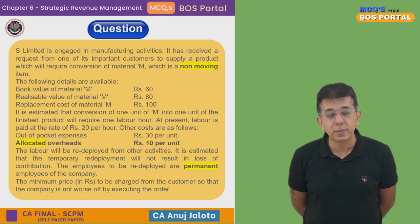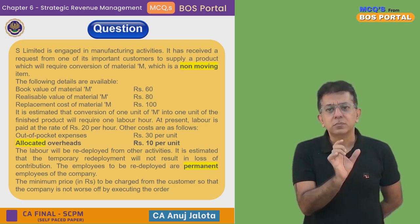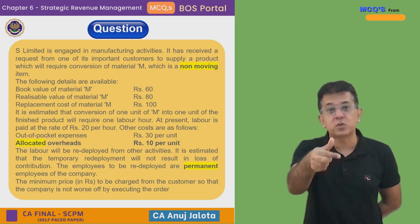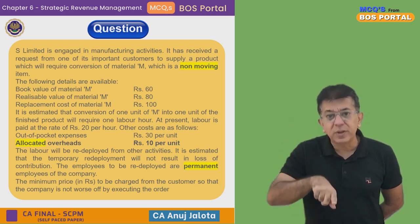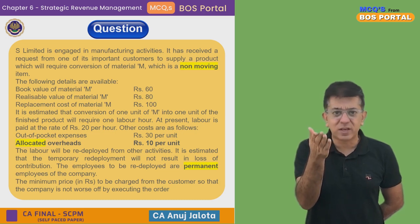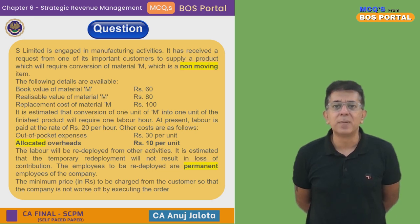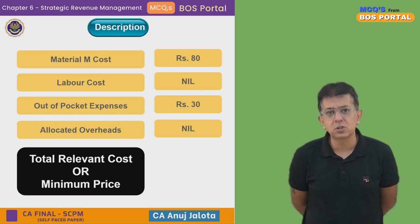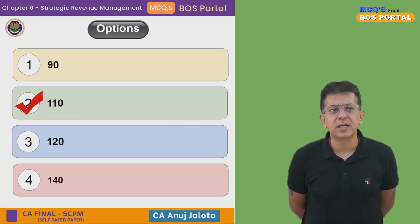Next: allocated overheads. As I've said many times, overheads given for a product are by default apportioned overheads. If specific overheads were to be incurred because of this order, it would be different — but these are allocated/apportioned overheads. Rent, for example, is not incurred for making one unit; it's only apportioned to a unit due to absorption costing methods from your C-Inter studies. Just because you charge something in an accounting way doesn't mean you're actually incurring it for this order. So extra overhead cost is nil. Total relevant cost or minimum price = ₹80 + nil + ₹30 + nil = ₹110. The correct answer is option 2.